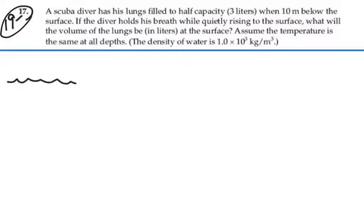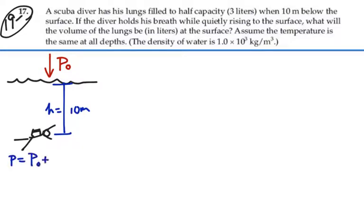So if we had water and we had a scuba diver, and the depth is 10 meters, and we know we have atmospheric pressure bearing down on the top of the water, the pressure at any depth is going to be equal to the pressure at the top plus ρgh, where ρ is the density of the fluid, g is 9.8, and h is the depth. We have that from physics 1.